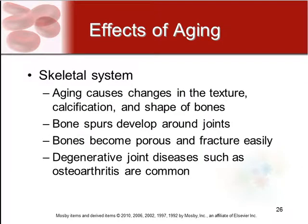Some of the effects of aging: for the skeletal system, aging changes the texture, calcification, and shape of bones. Bone spurs, which cause arthritis, occur around the joints.